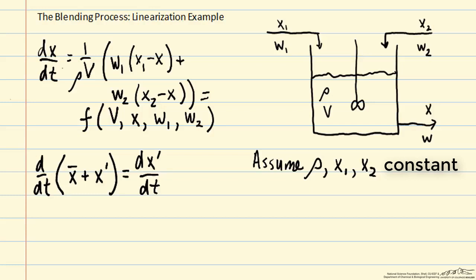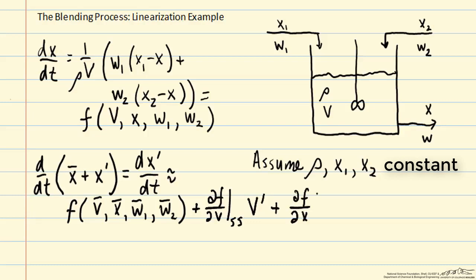And then we're going to approximate the right-hand side by a first-order Taylor series approximation. So we start off by evaluating f at the steady state. And then we add on linear terms associated with each of the independent variables in our function f. So we have ∂f/∂V evaluated at steady state times V', plus ∂f/∂x evaluated at steady state times x', plus ∂f/∂w1 evaluated at steady state times w1', plus ∂f/∂w2 evaluated at steady state times w2'.